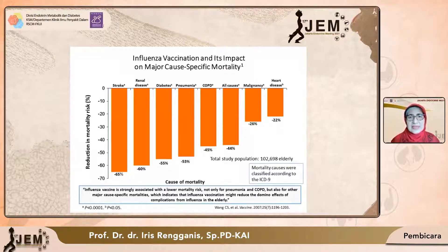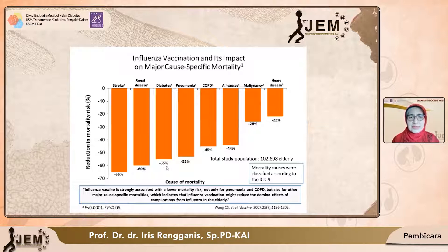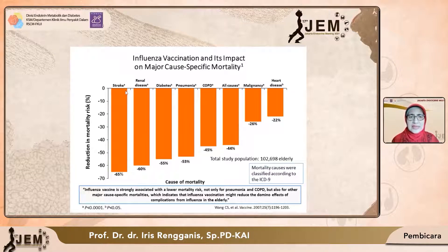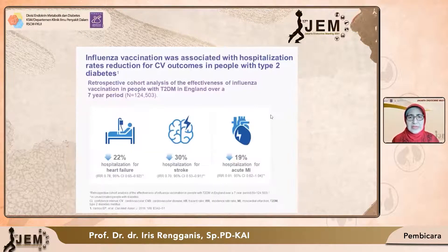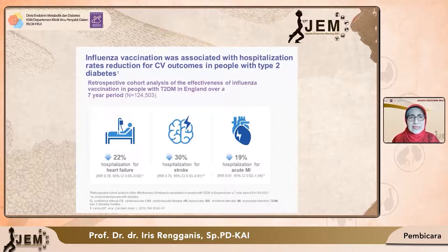Vaksinasi influenza dan dampaknya: kalau kita lihat terhadap stroke, dia bisa mengurangi mortalitas penyakit influenza 65% pada stroke. Kemudian pada penyakit ginjal 60%, dan pada diabetes 55%. Jadi lumayan perlindungan vaksin influenza terhadap penyakit-penyakit tertentu, sangat dianjurkan. Karena penyakit-penyakit ini merupakan penyakit berat dan dapat menjadi kematian bilamana mereka terkena penyakit influenza. Vaksinasi influenza ini sangat berhubungan dengan perawatan di rumah sakit — penyakit-penyakit kardiovaskular yang ada influenza akan menurun bila dilakukan vaksinasi influenza.